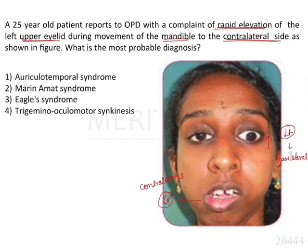It is due to an aberrant connection between the nerves supplying the muscles which bring about lateral movement of the mandible and the nerves that supply the upper eyelid. The mandibular nerve is involved because it supplies the muscles of mastication, of which the pterygoid muscle brings about lateral movement. The lateral pterygoid is supplied by the mandibular nerve, a branch of the fifth cranial nerve — the trigeminal nerve.